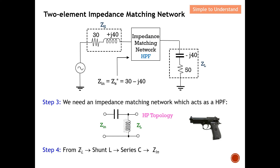Step 4: for the impedance matching, we always start from Z_L. The sequence of elements encountered is: shunt L first, then series C, and finally we reach Z_in. So starting from Z_L, I move through shunt L, then series C, to arrive at Z_in. Now I'm ready to draw this on the Smith chart.